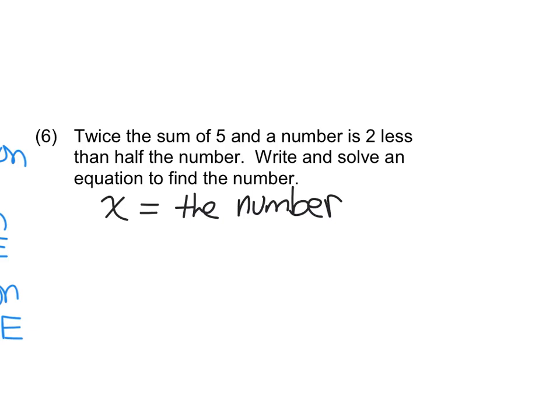All right, so twice the sum of five and a number. Is. Is. Is means equals. Two less than half the number. So we have two components going on here. And you know how it is with word problems. The biggest challenge in most cases is coming up with the equation that you have to solve. Because once you have the equation, you're usually in pretty good shape.